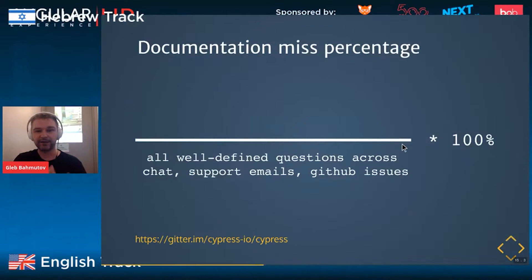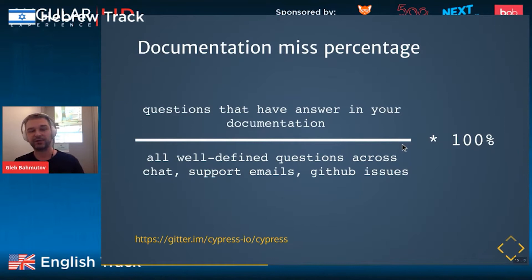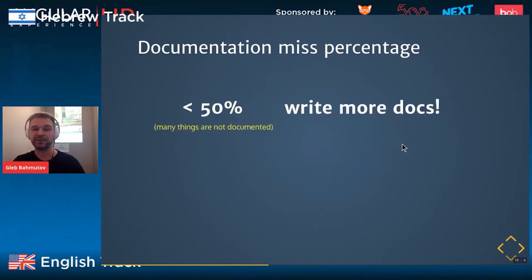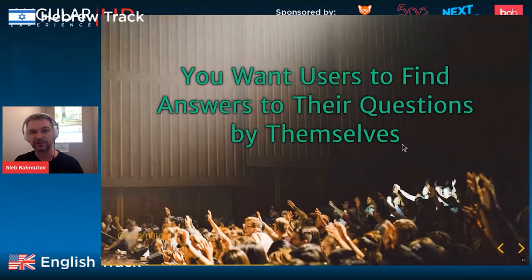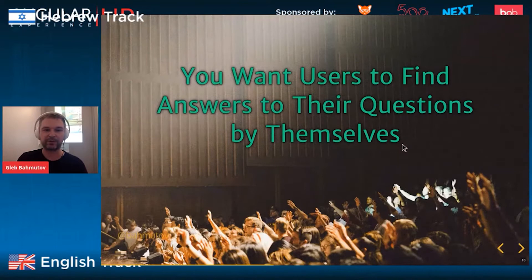You can calculate your documentation missed percentage. Take all well-defined questions and see how many are answered in your documentation. If it's less than 50%, there are more questions not answered in your docs — so write more. But if it's above 50%, your documentation has a discoverability problem: users cannot find answers even though they exist. You want users to find answers to their own questions, because you cannot scale yourself.